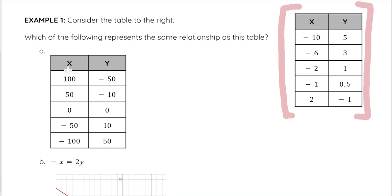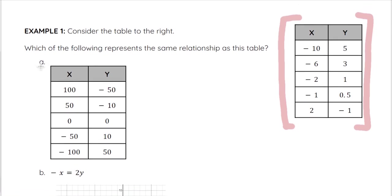Let's take a look at answer choice A. It's a table, and with a table we have two options to compare to the original. Tables are a little hard to compare just by looking — obviously these do not look the same, they are not the same numbers, but they could represent the same relationship. The only way we know that is if we actually compare the key pieces of information. I'm going to suggest we start by writing the slope and the y-intercept — the slope-intercept form of this table — and then use that to compare to our answer choices.